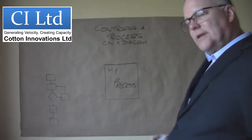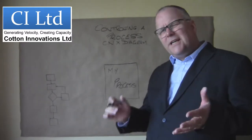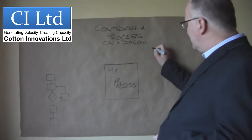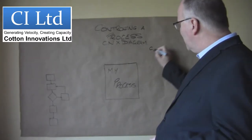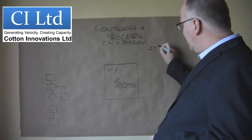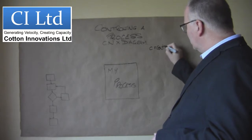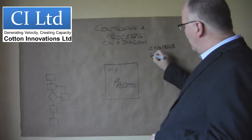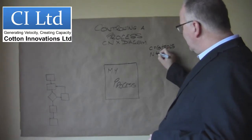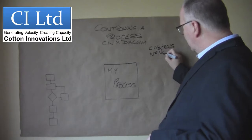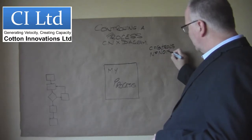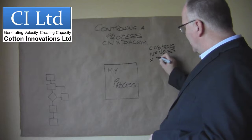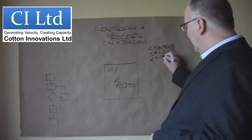So the CNX diagram — what is the CNX diagram? Well, the CNX diagram looks at three things. It looks at C, which is controls; N, which is noises; and X, which is the inputs.